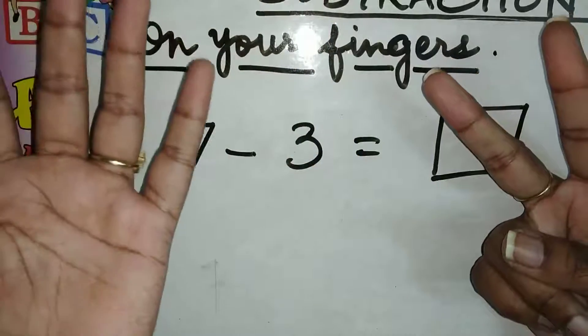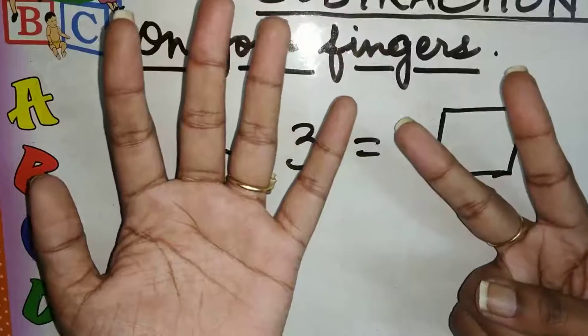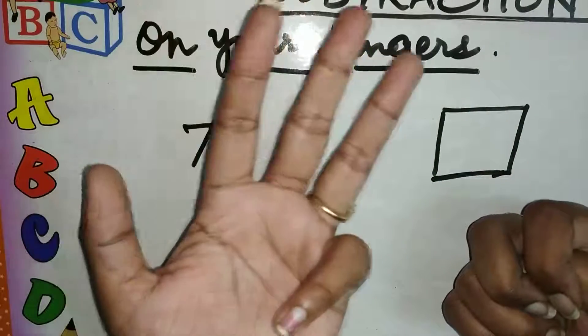Now, how many you have to bend down? Three. So, out of seven you have to bend down three. One, two and three.